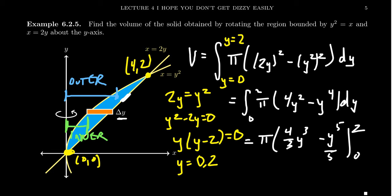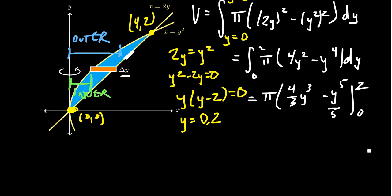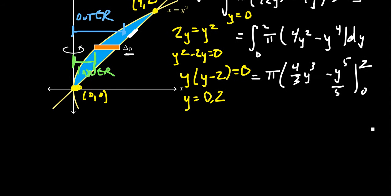We love the fact that the bottom number is 0, because when we plug in 0, everything will just vanish. When we plug in 2, we're going to get something non-trivial. We get pi times 4 thirds times 2 cubed, which is an 8, minus 2 to the fifth, which is 32, all over 5.